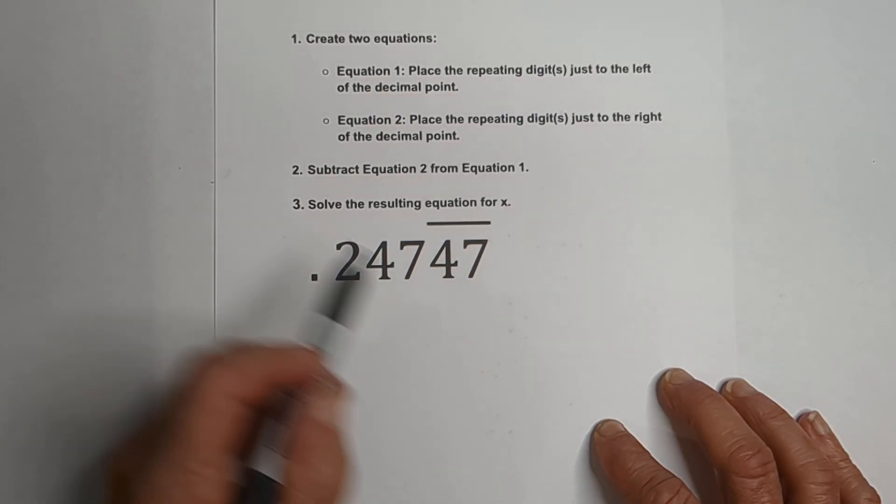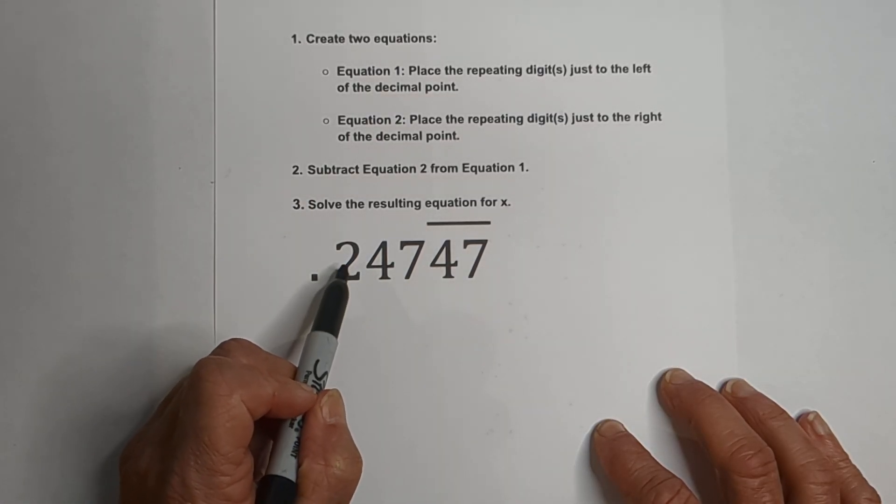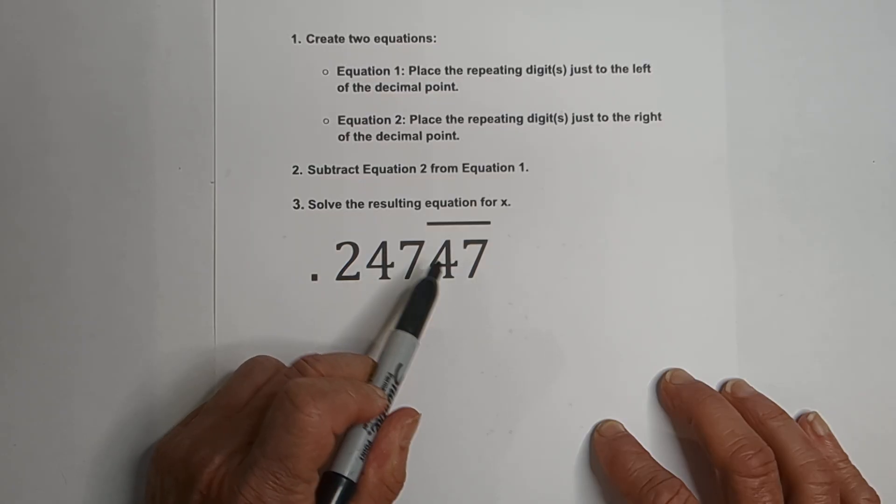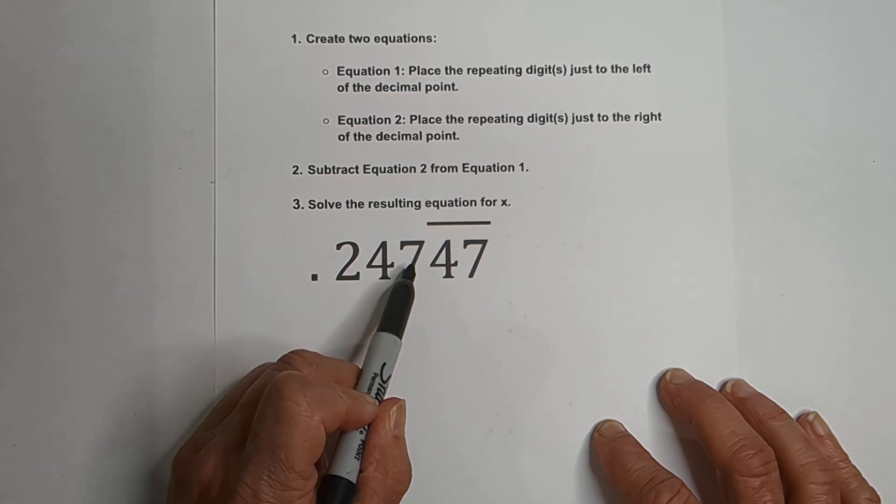let's go over how to convert 2.4747 repeating into a fraction. And what makes this a little tricky is, well, we've got a couple things. One, this 2 is not part of the repeating decimal, and the repeating decimal is 2 digits.